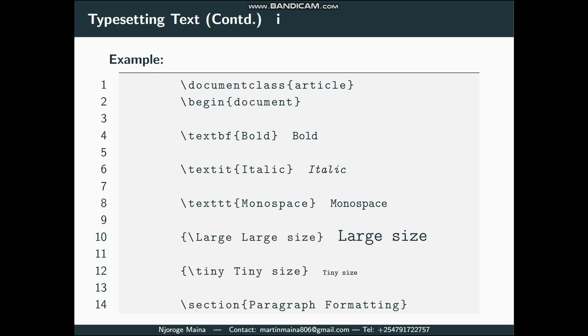It starts chapters on odd-numbered pages by default and provides features suitable for book formatting. Then we have a Letter class which is used for creating letters and provides specific commands for formatting addresses, the letter body, and signatures. Then we have Beamer class which is designed for creating presentations or slideshows. To specify a document class you typically use the document class command, and in our case we have specified an Article document.